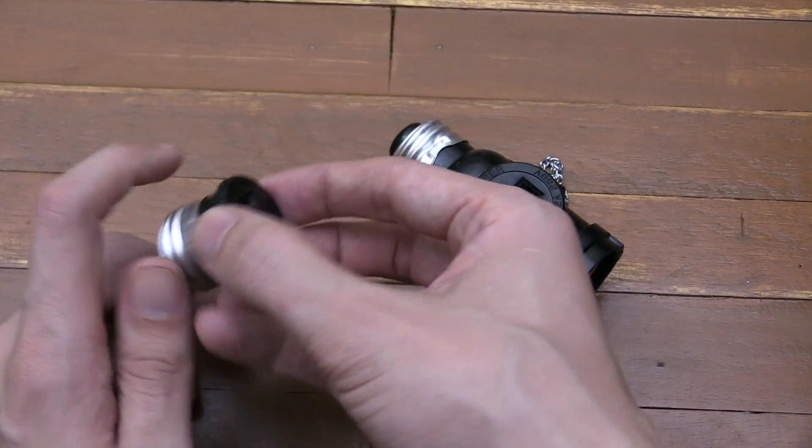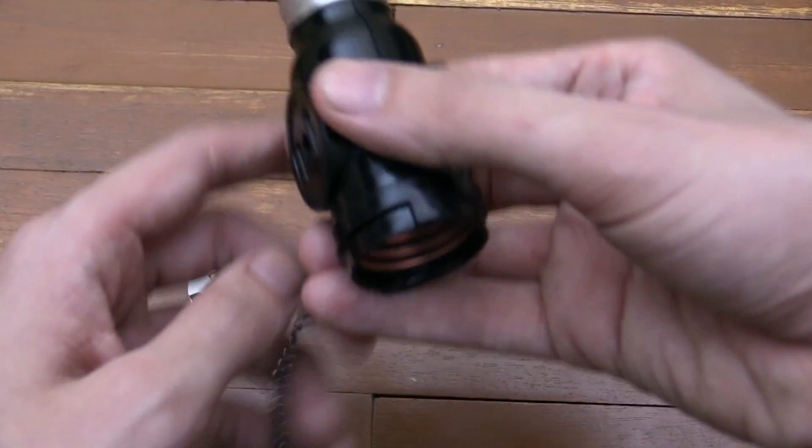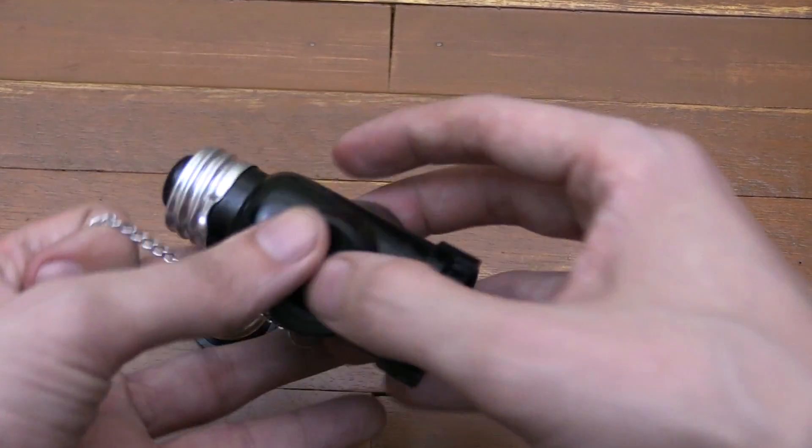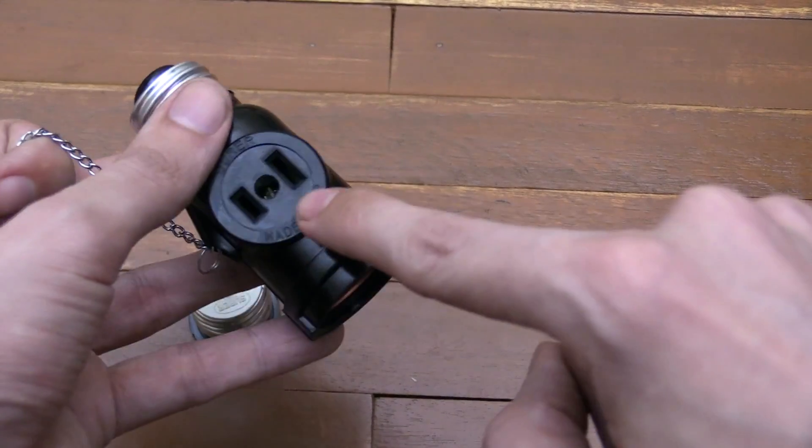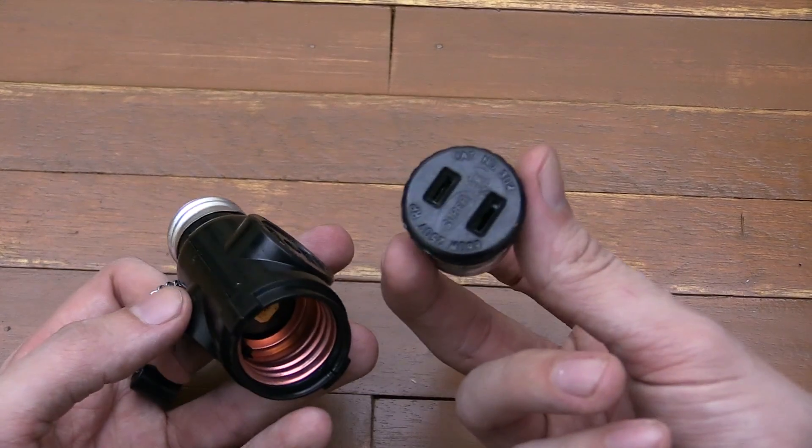Now we have ones like this where you just unscrew your existing bulb, screw this in and you've got a two prong outlet. And then you've got other ones like this which are a bit more advanced. This one lets you screw your bulb in here and then have one outlet either side. So this gives you two outlets and a bulb, this one just gives you one outlet.